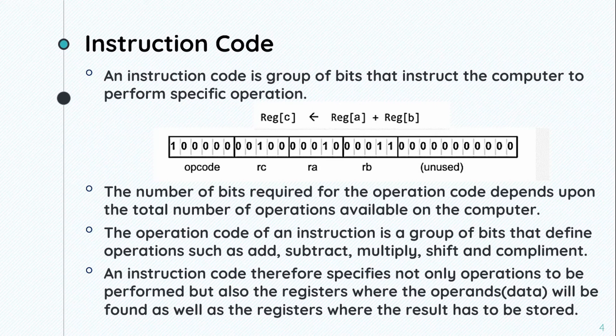but also the registers where the operands or data will be found as well as the registers where the result has to be stored. For example, the instruction code specifies which operation and which registers to use for storing the result.